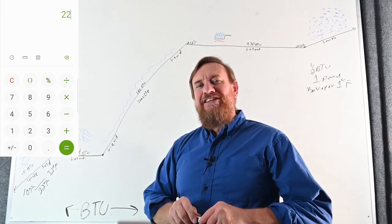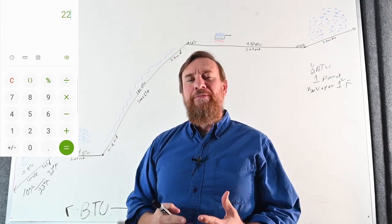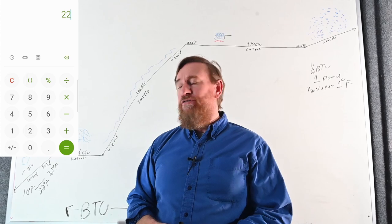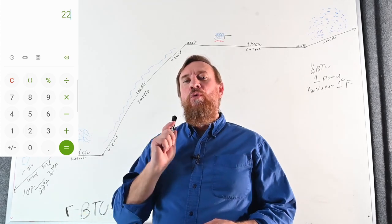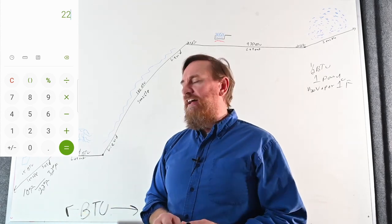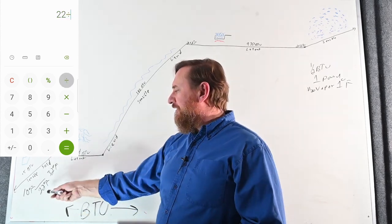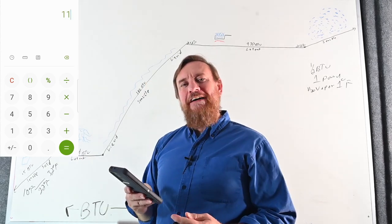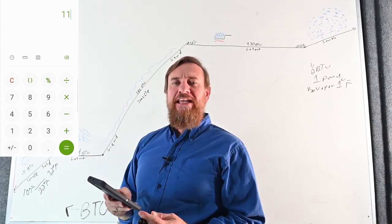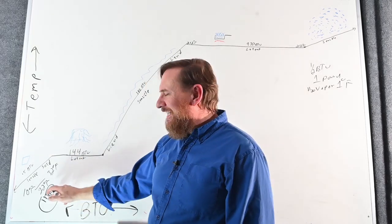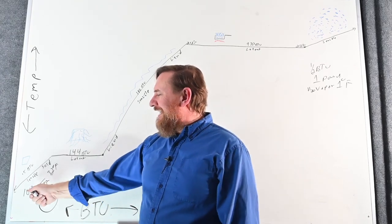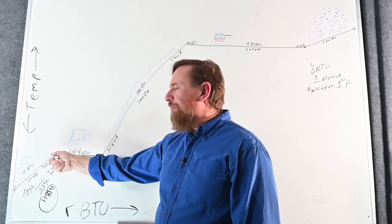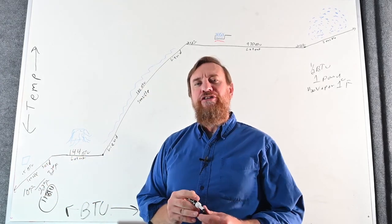Now, to see how many BTUs that is: it takes half a BTU to change one pound of ice one degree Fahrenheit. So we take 22 divided by two, which is 11 BTUs of heat energy. It's going to take 11 BTUs to heat the ice from 10°F all the way up to 32°F.